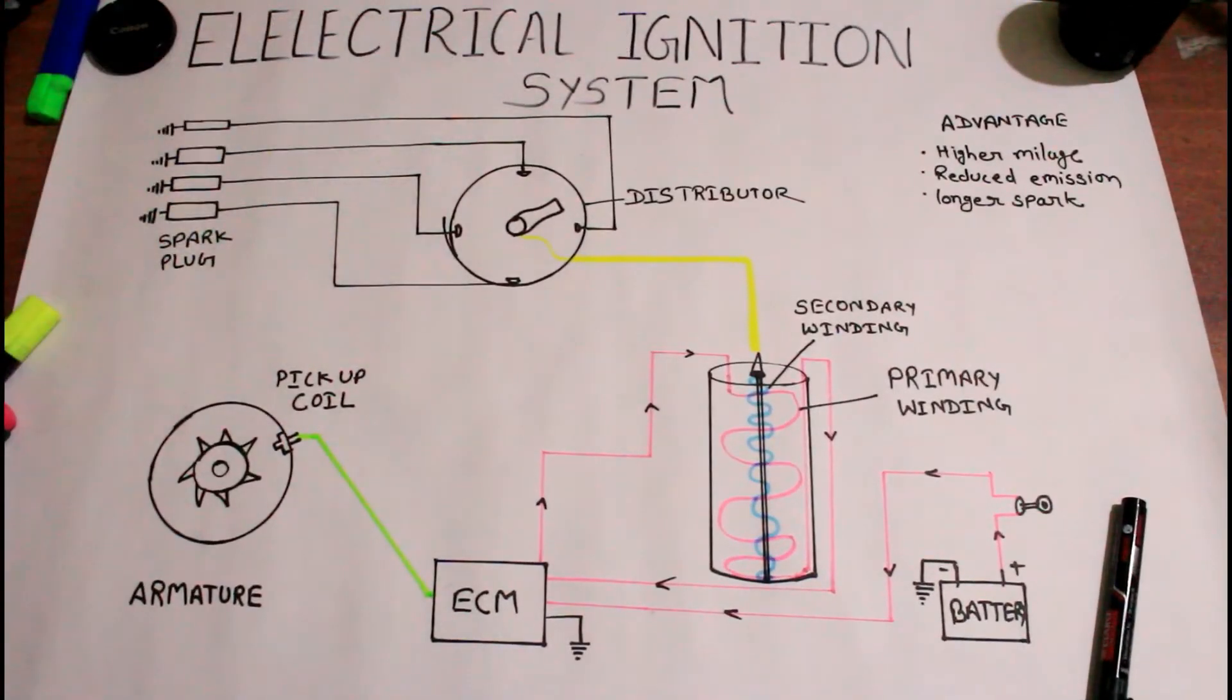Electrical ignition system. The electrical ignition system is pretty similar to the battery ignition system. The only difference is here we are using the armature instead of contact breaker.